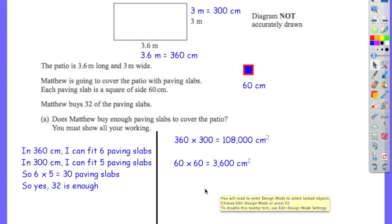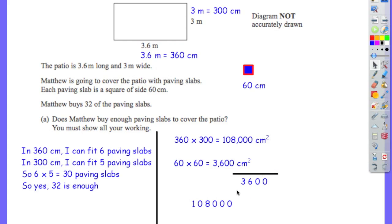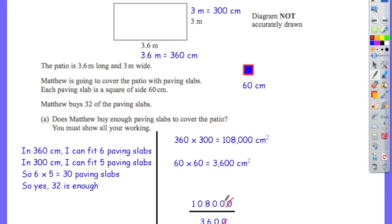Now we actually work out 108,000 divided by 3,600. When dividing, you can simplify by cancelling common zeros: cancel two zeros from both numbers, which leaves 1,080 divided by 36. So essentially we need to divide 1,080 by 36.